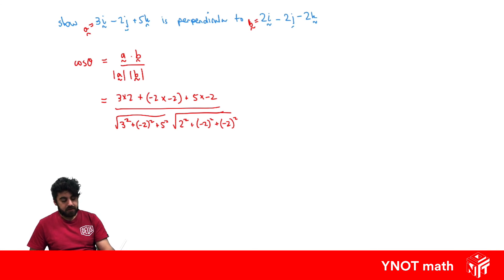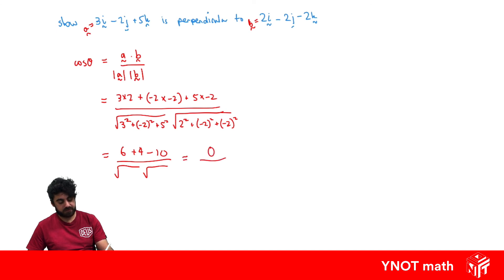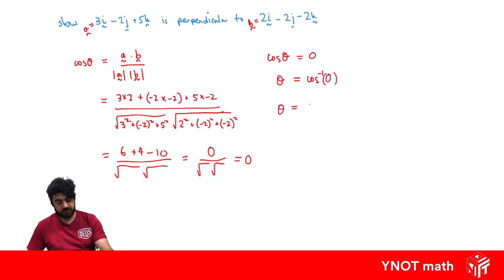We're expecting a result of zero, so let's focus on the numerator: 6 plus 4 minus 10, which equals zero. So we get zero over the two square roots, which is just zero. Therefore cos theta equals zero. Taking the inverse cos of both sides gives theta equals 90 degrees. We've successfully shown that the angle between the vectors is 90 degrees, therefore A is perpendicular to B.